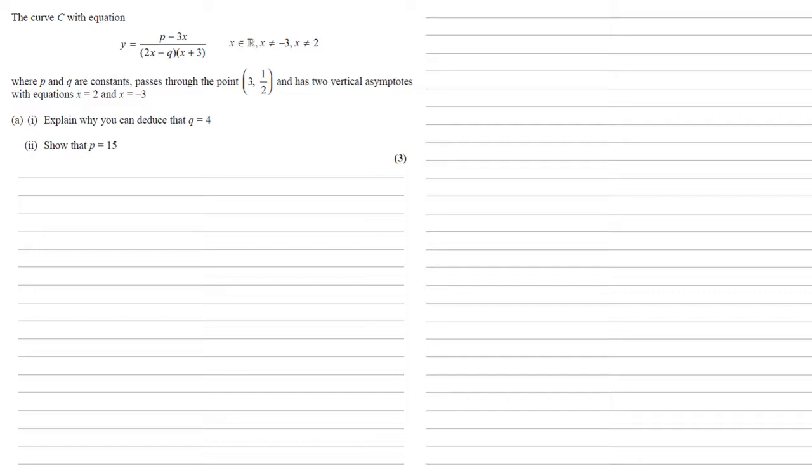We need to explain why you can deduce that q equals 4. So we know there are two vertical asymptotes. These are the points where y doesn't have a value, so this must be where the denominator is equal to 0. There's an x plus 3 in there, so that's going to give us the asymptote of x equals minus 3 because that's the value that will make that bit of the denominator equal to 0.